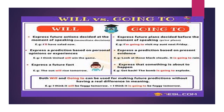While 'going to' expresses a future plan decided before the moment of speaking — like 'I'm going to visit my aunt next Friday.' Or it expresses a prediction based on present evidence — 'Look at those black clouds, it's going to rain.' Or it expresses that something is about to happen — 'Get back, the bomb is going to explode!' or 'Watch out, you are going to fall!' Thank you, my students. I hope you enjoyed the lesson. Please answer the worksheet, and I'll send you the model answer after.